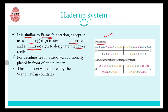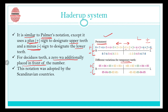For permanent teeth in the Haderup system, the numbering 1 to 8 still goes from the midline, but instead of the quadrant symbols, a plus sign is used for upper teeth and a minus sign is used for lower teeth. For temporary teeth, a plus sign also denotes upper and minus denotes lower — but here's a key difference from Palmer: instead of alphabets for deciduous teeth, a zero is placed in front of the numbers. Everything else matches the permanent dentition notation. This notation was adopted by Scandinavian countries.